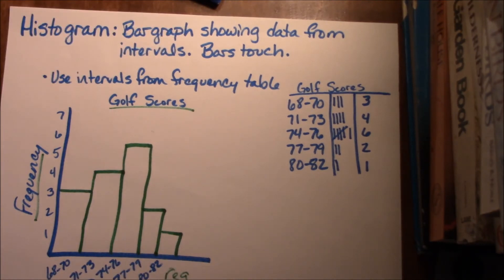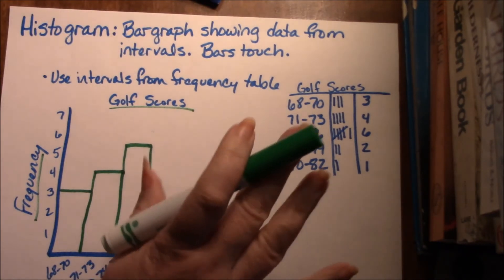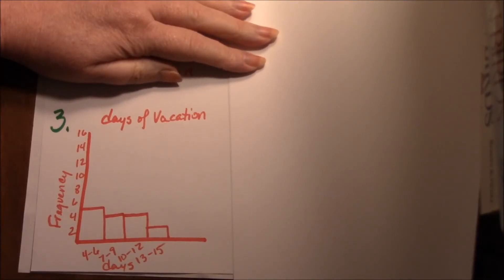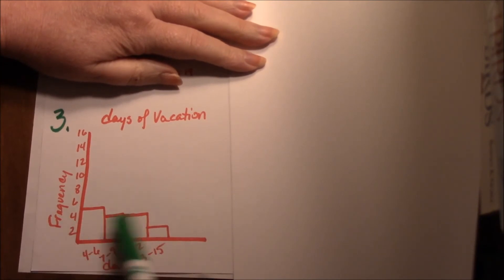Okay, pause here and try checkpoint number three. Come back when you're done. Checkpoint number three's histogram is days of vacation, and I've got frequency here and number of days here, and histogram bars that touch here.